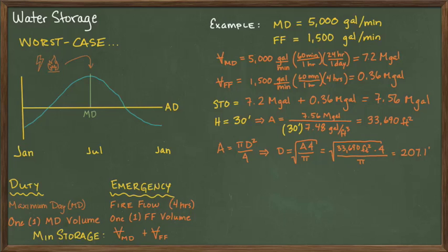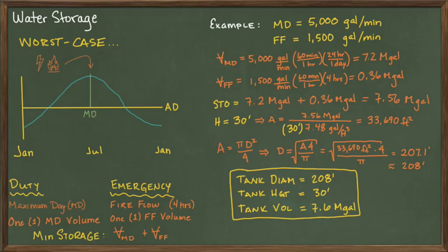We don't want the tank to be just barely big enough to hold the volume, so we round up to 208 feet. Therefore, our tank will have a diameter of 208 feet, a height of 30 feet, and a volume of 7.6 million gallons.